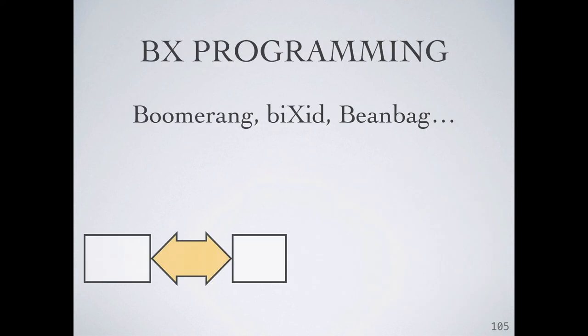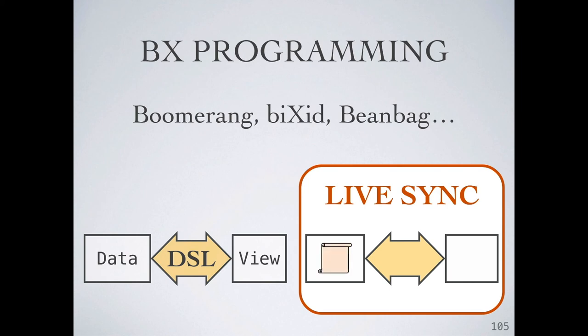Our work also resembles bidirectional programming. In bidirectional programming, some source data is kept in sync with changes to a view of that data by a program, often written in a domain-specific language. In our setting, a program in a general-purpose language is kept in sync with changes to its output, not by a user-editable DSL program, but by a fixed framework like Sketch&Sketch, which provides evaluation in one direction and synthesis in the other.